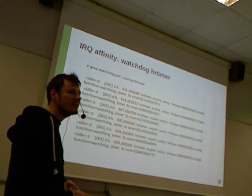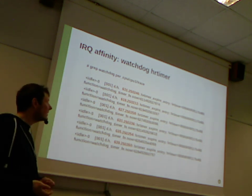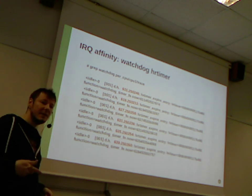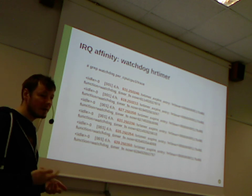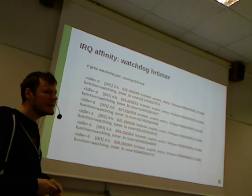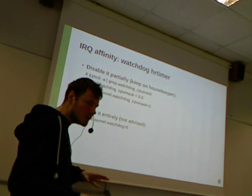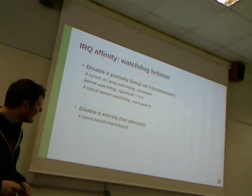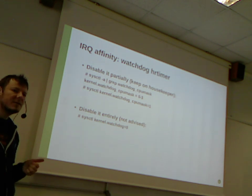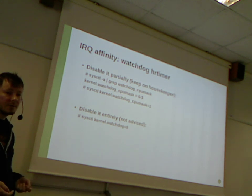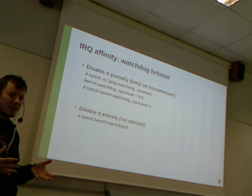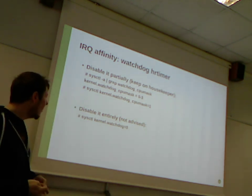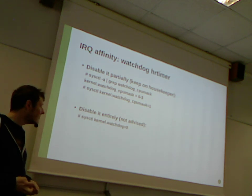A practical example that is easy to deal with is the watchdog high-resolution timer, which most distros enable. It is a timer that periodically checks on each CPU if there is a lockup pending — a hard lockup or a soft lockup — and fires approximately every 8 seconds. To disable it, use sysctl with the kernel.watchdog_cpumask. It is strongly recommended to keep at least one CPU running the watchdog, since a hard lockup often appears on all CPUs. Disabling it entirely is not advised.